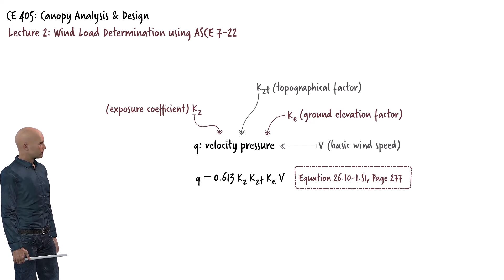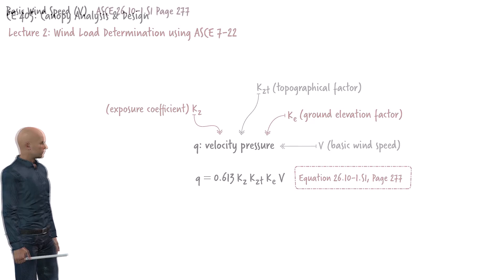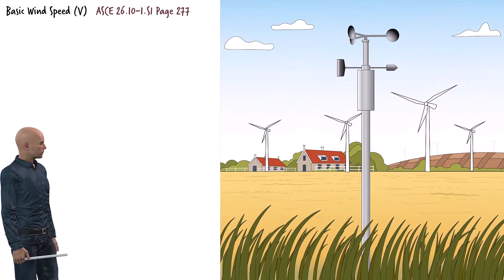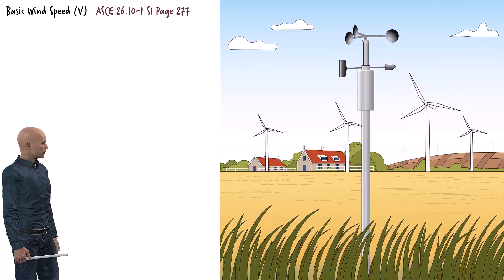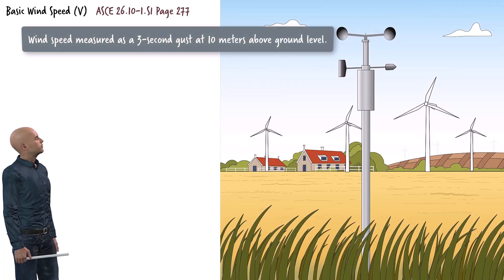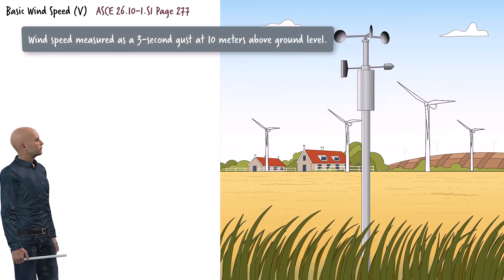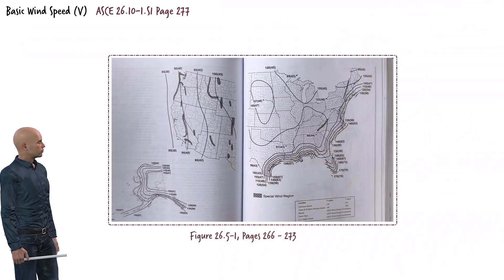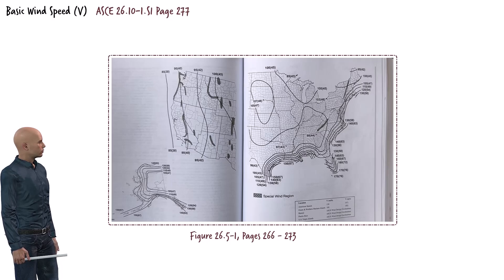Let's examine the rationale behind assigning values to each of these coefficients, starting with basic wind speed. Imagine you're standing in an open field and suddenly a strong gust of wind hits you. That quick burst is what we're interested in. Basic wind speed is all about capturing the intensity of these short wind bursts. Specifically, it's the peak 3-second gust measured 10 meters above the ground in open terrain. ASCE 7-22 provides the basic wind speeds across the United States. These values come from years of historical wind data, carefully analyzed through meteorological studies and statistical methods.